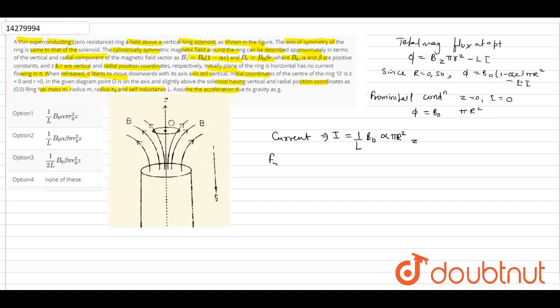So force will be minus B0 i into z into 2 pi r0. Putting the value, this becomes minus kz.